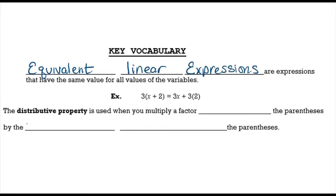Now equivalent linear expressions are expressions that have the same value for all values of the variables. Now the distributive property is used when you multiply a factor outside of the parentheses by the expression that is inside the parentheses.